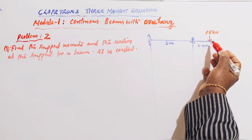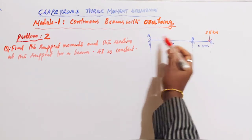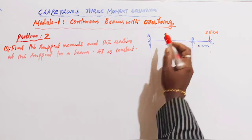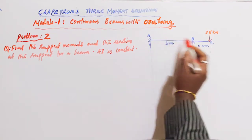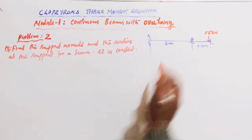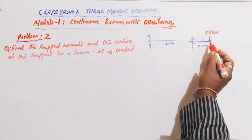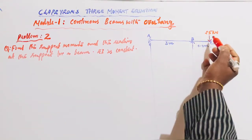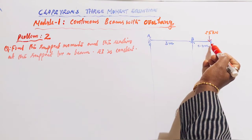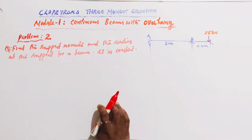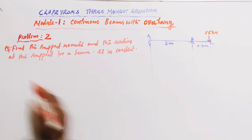End A is fixed, and there is an overhang BC. There is no external load in the overhang region, and no load in between A and B. Let's see the solution.